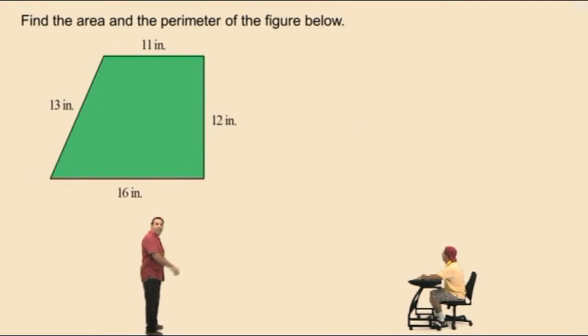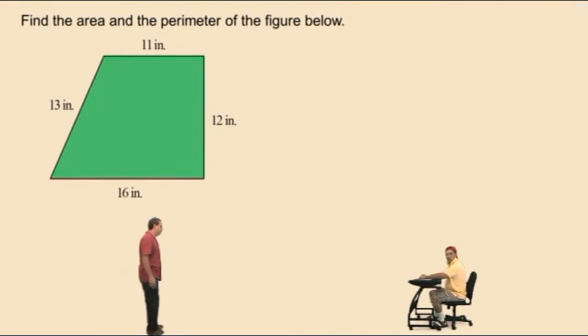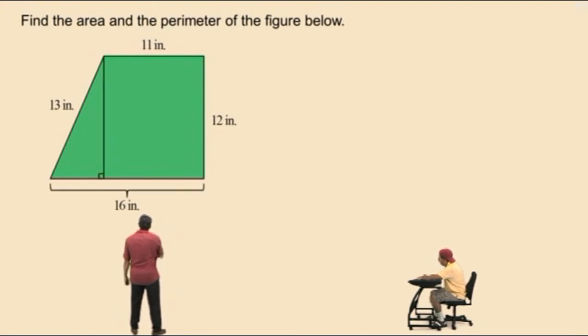All right, Charlie, now let's find the area. Don't get scared. Okay, so here we go. First, let's emphasize that this bottom length is 16 inches. And let's draw a perpendicular down right there, forming a rectangle and a right triangle.